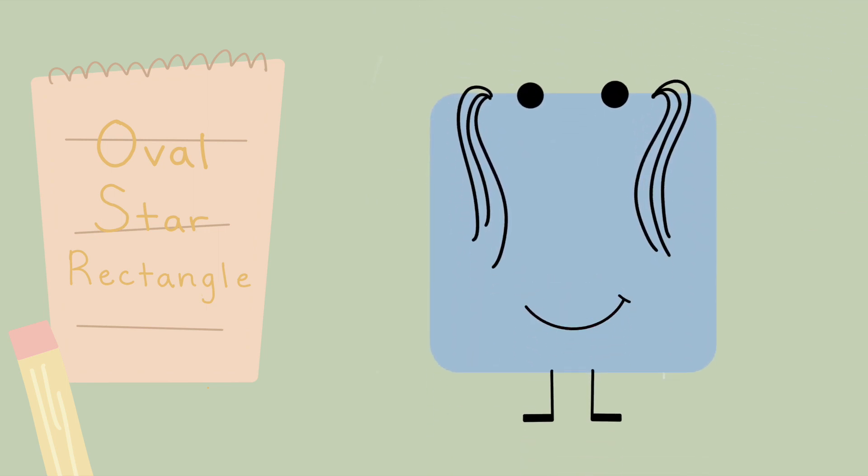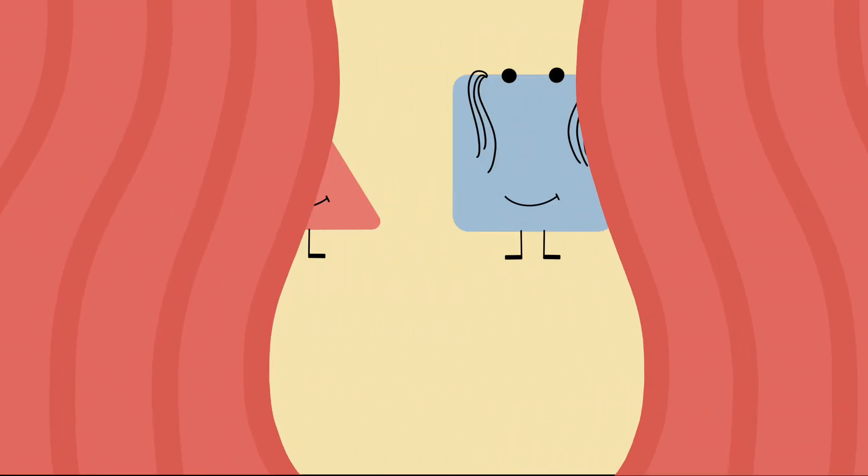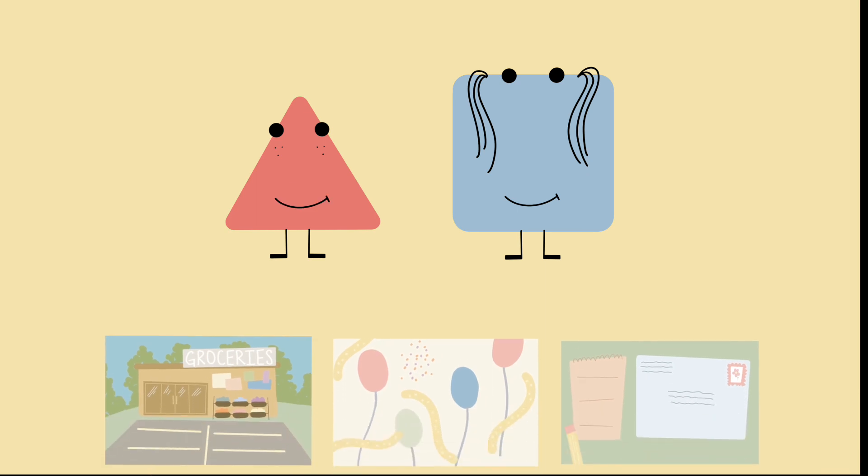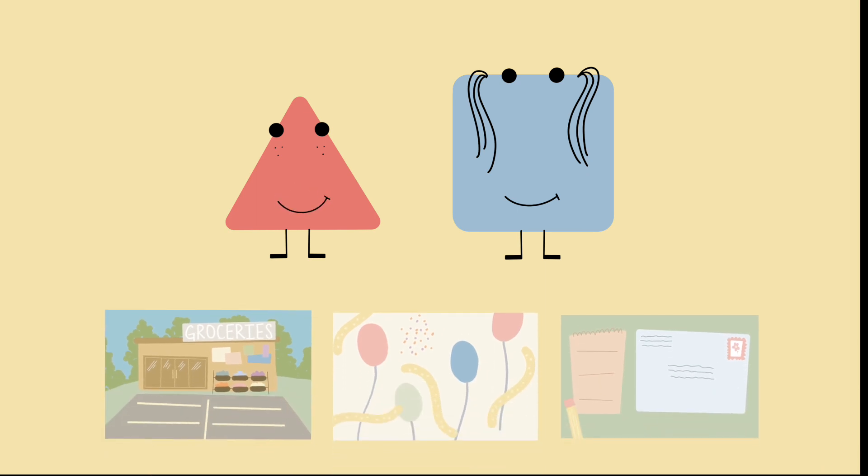Great job, Asher. You wrote all the invitations. Now Circle can celebrate his birthday with all his friends. Let's take a look at our list. Did we go to the grocery store and find all the ingredients we need to make a big birthday cake for Circle's surprise birthday party? Yes. Did we sort the party decorations? Yes. And did we write all the names on the party invitations? Yes! Looks like it's time for the surprise party.